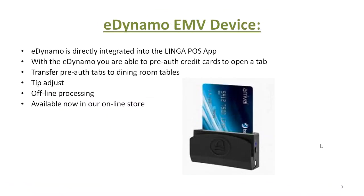E-Dynamo EMB devices. The E-Dynamo is directly integrated into the Linga POS app. With the E-Dynamo you are able to pre-auth credit cards to open a tab, transfer that pre-auth tab to the dining room, and tip adjust with offline processing — a huge option now available in our online store. The device is very small and mobile, and it can also be attached to a case for an iPad, giving you a pay-at-the-table option.